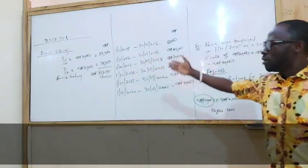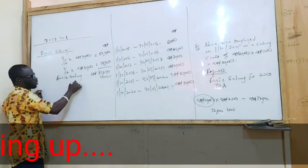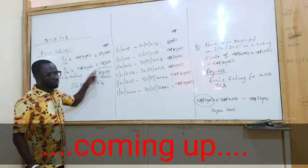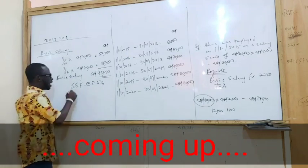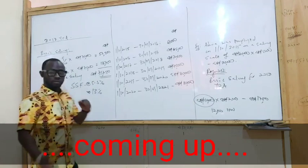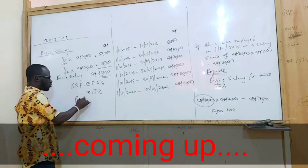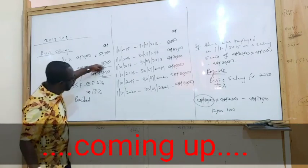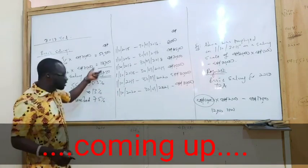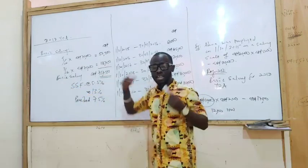Why did I do this? Because note that your social security contribution — social security fund — the 5% that the employee pays is on the basic salary. That's the first tier. The second tier, the employer's payment of the 13%, is also going to be on the basic salary. Sometimes there is a third tier, which is a provident contribution or private contribution, and that would also be on the basic salary, sometimes 7.5%. So if you mix up the basic salary, you're in trouble.